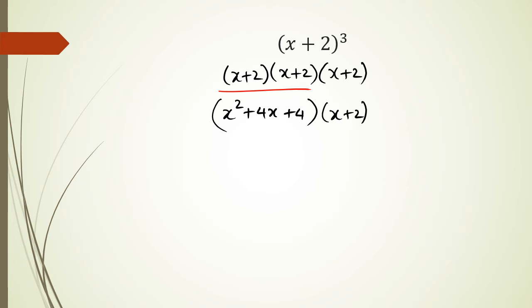How we do this is the same idea as before. You take each term and multiply it with the other terms. For example, x² times x equals x³.